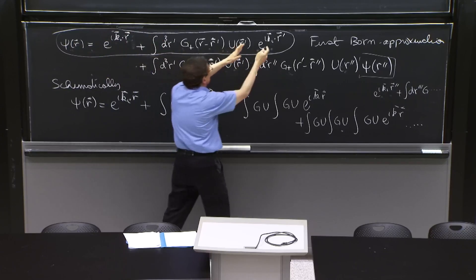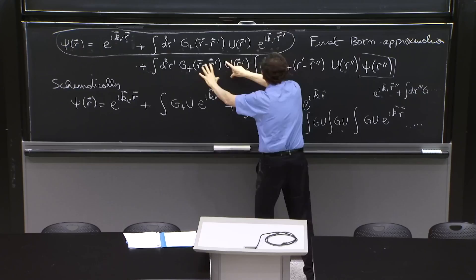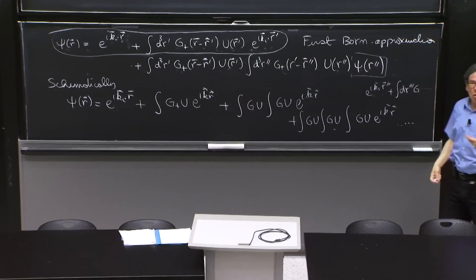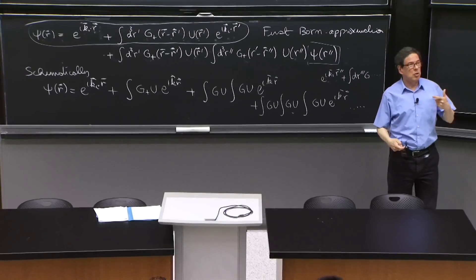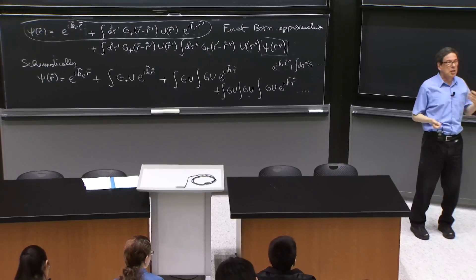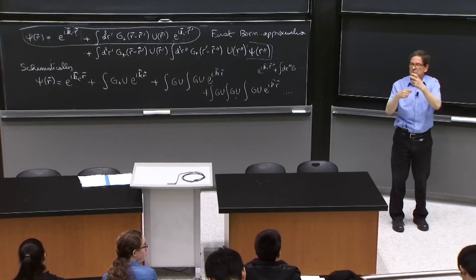we can set the wave function equal to the free part plus the interacting part. So we have the free part, and it gave us this quantity. And the interacting part gave us the second one.